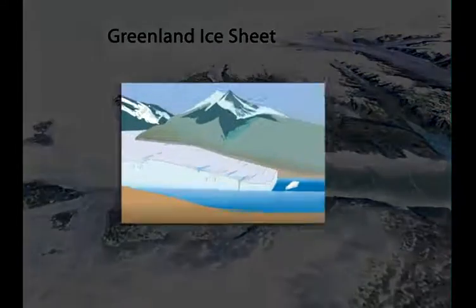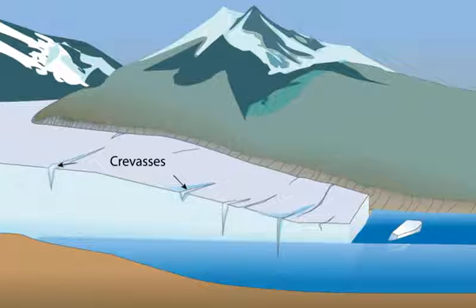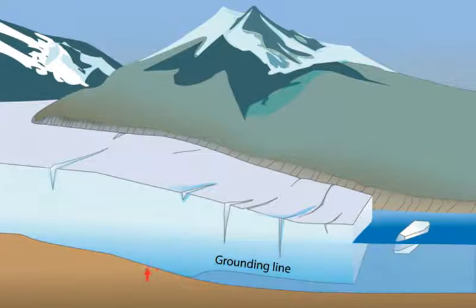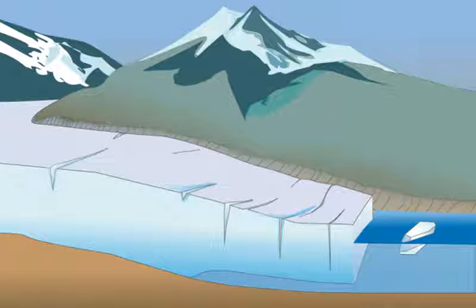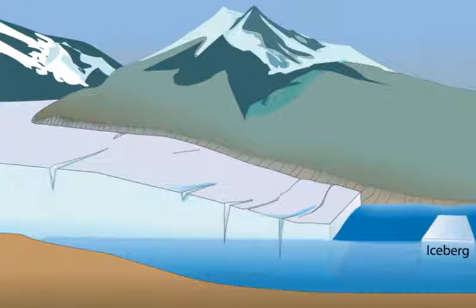Large fractures or crevasses form where ice flows faster than it can deform. Many glaciers end in the ocean or large fjords. The grounding line is where a glacier transitions from being grounded on bedrock to floating on the water. Beyond the grounding line, crevasses can propagate through the glacier, causing large blocks to break off as icebergs.